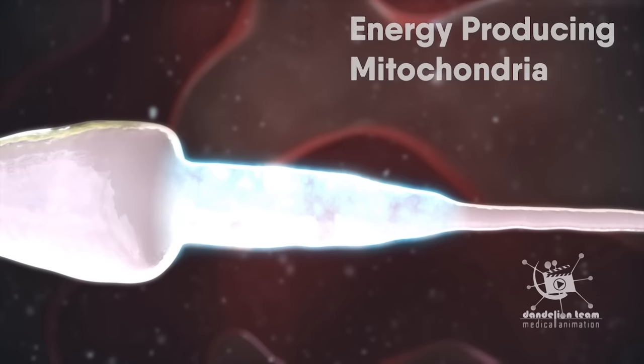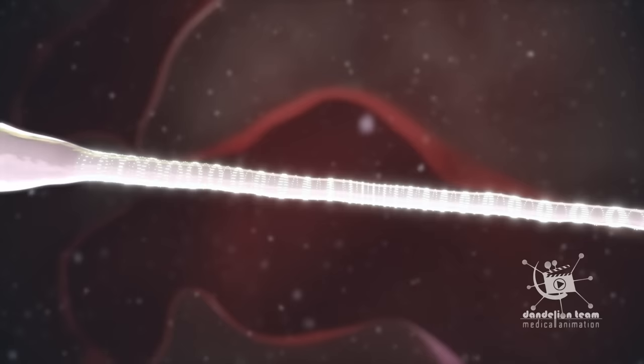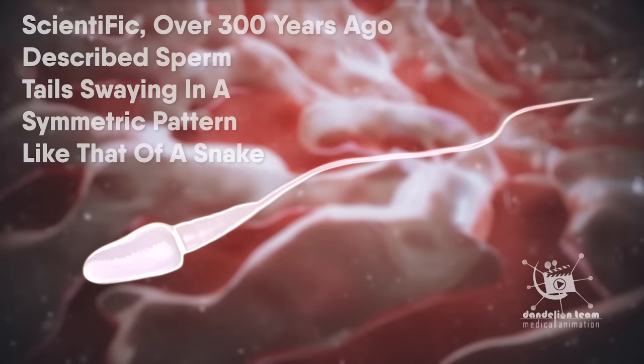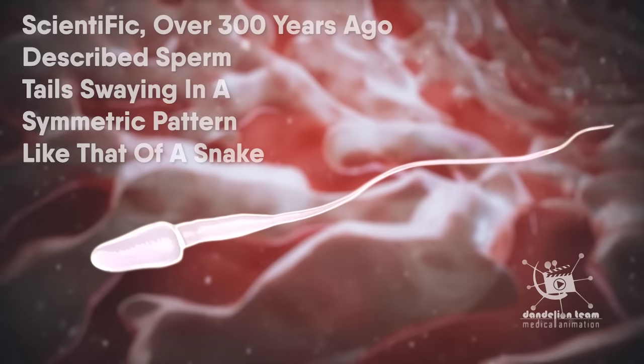The sperm tail is the most complicated structure, with more than 1,000 proteins involved in its functioning. Scientists over 300 years ago described sperm tails swaying in a symmetric pattern like that of a snake. With the advent of three-dimensional microscopes, most recent studies have shown that sperms move by spinning rather than swimming.